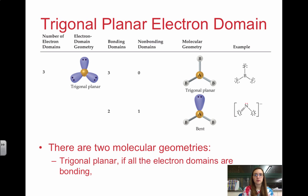Next we have the trigonal planar electron domain. We have three electron domains around, and that's trigonal planar. But we can get two different molecular geometries from this. If we have three bonding, zero non-bonding, that's still trigonal planar.